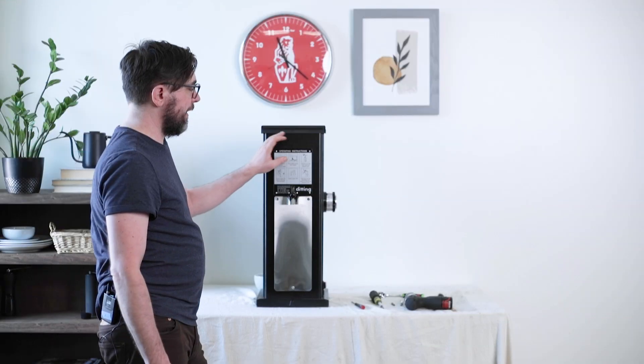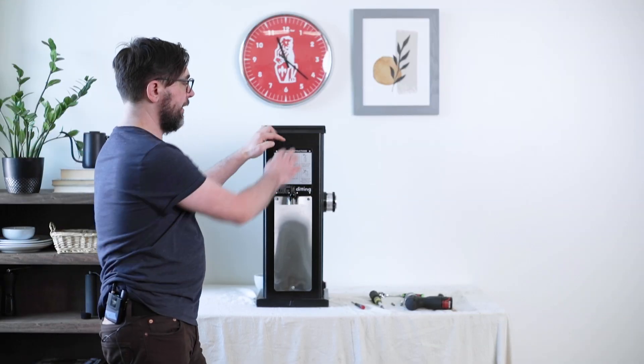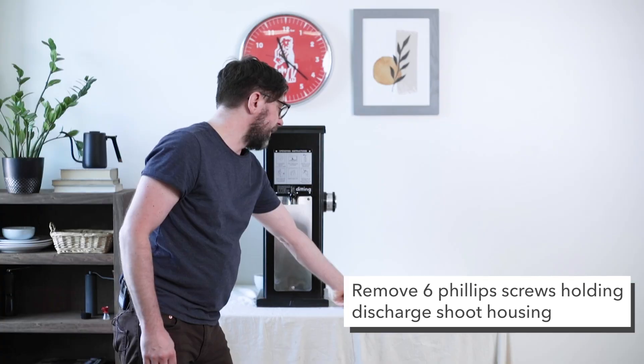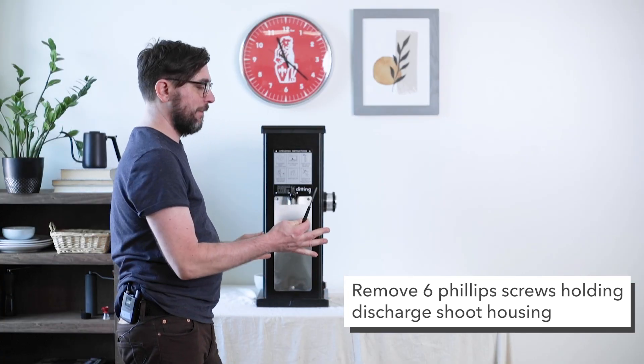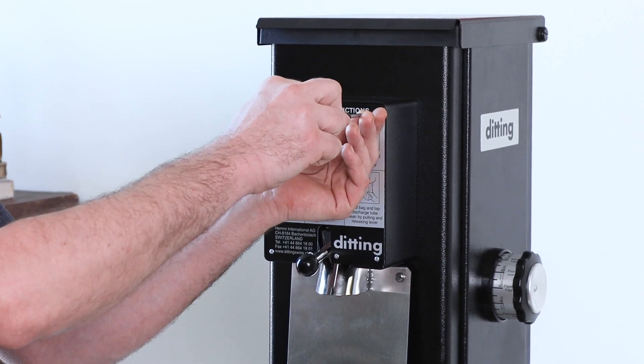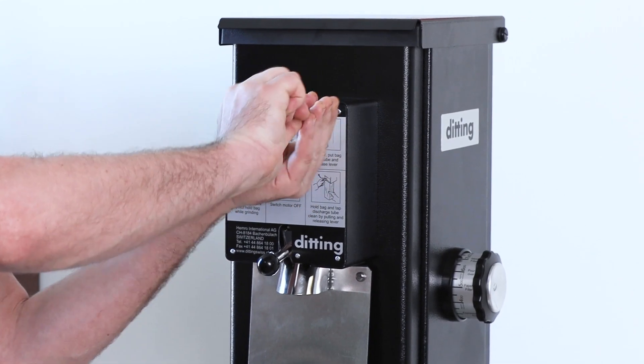So the first thing we need to do is remove the discharge tube housing. There are six screws on the front and these are fairly small screws that will strip easily, so I recommend doing this manually with a small Phillips screwdriver that properly fits the head.